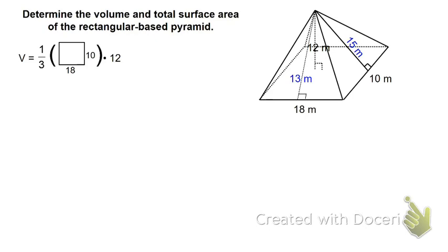Let's start with volume. The volume is going to be one-third times the area of the rectangle times the height of 12. 12 is the actual height of the pyramid, so that's the number we use for volume. The rectangle is base times height, so it's one-third of 18 times 10 times 12. One-third of 18 is 6; 6 times 10 is 60; 60 times 12 gives 720. It's volume, so three-dimensional — units cubed.